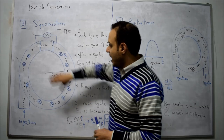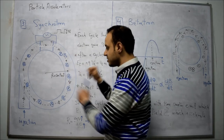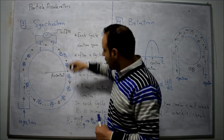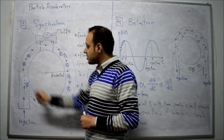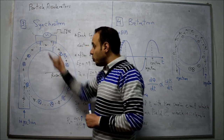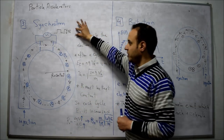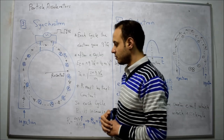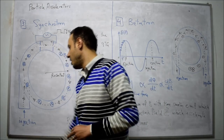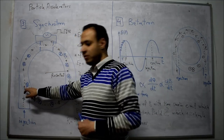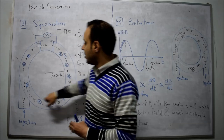In the synchrotron, we have a donut-shaped circuit or device, in which there is a magnetic field. Somewhere in this donut shape, we have two plates on which I will apply a voltage Va. And somewhere, I will make injection for the particles — for example, from this point. If I make an injection like this, the electron will find a perpendicular magnetic field inside this tube.